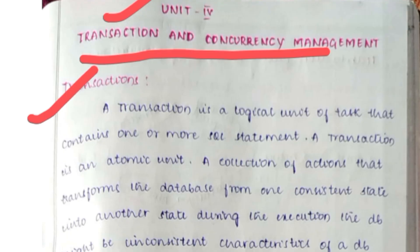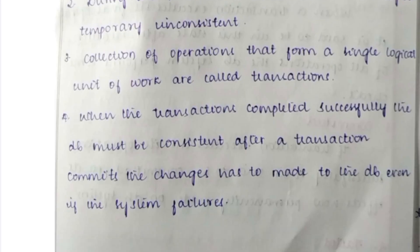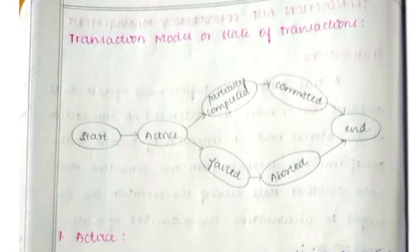What is meant by a transaction? A transaction is a task to be performed. It is an atomic unit — a collection of actions that transforms data from a database — and is known as a transaction.